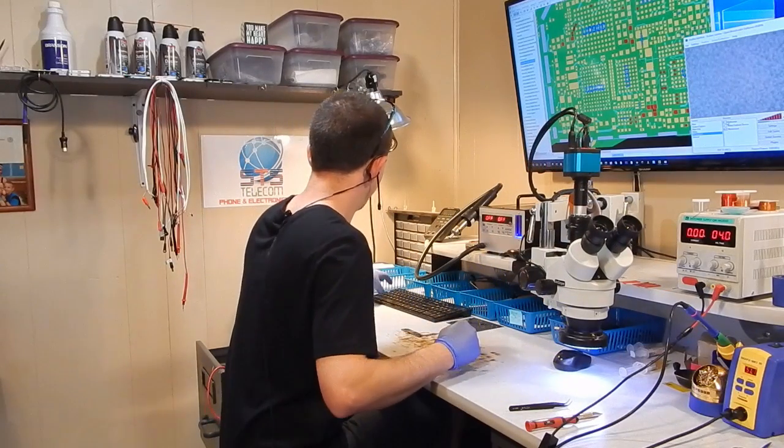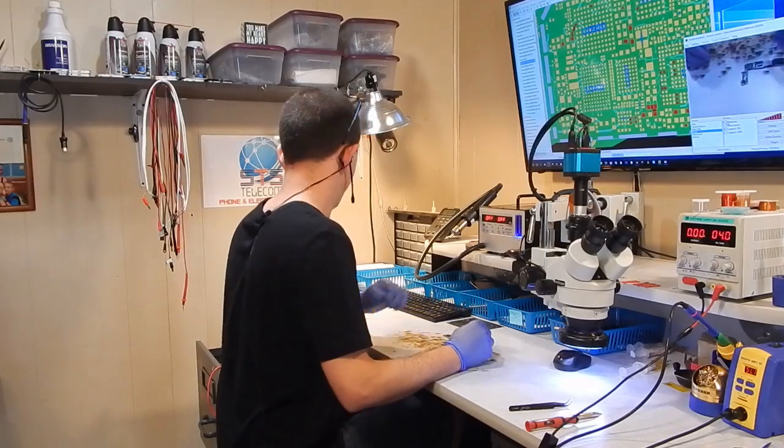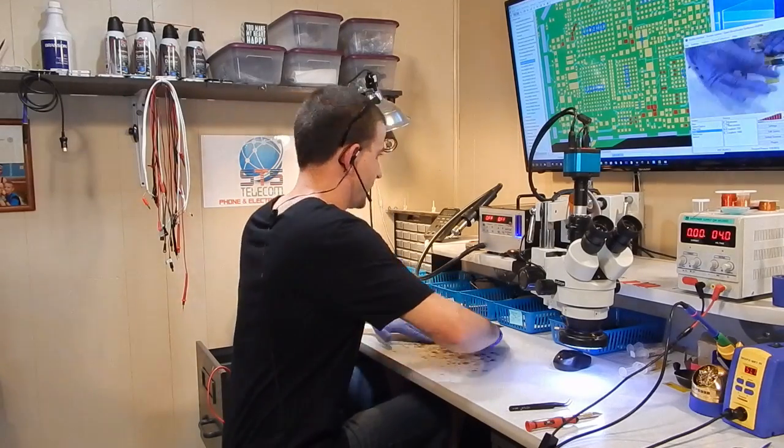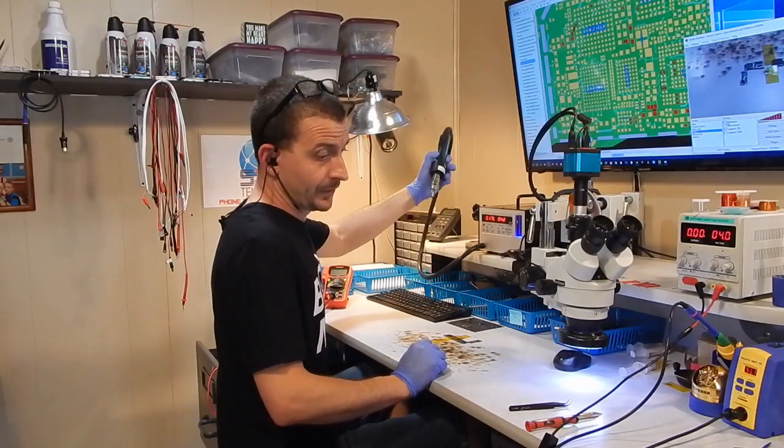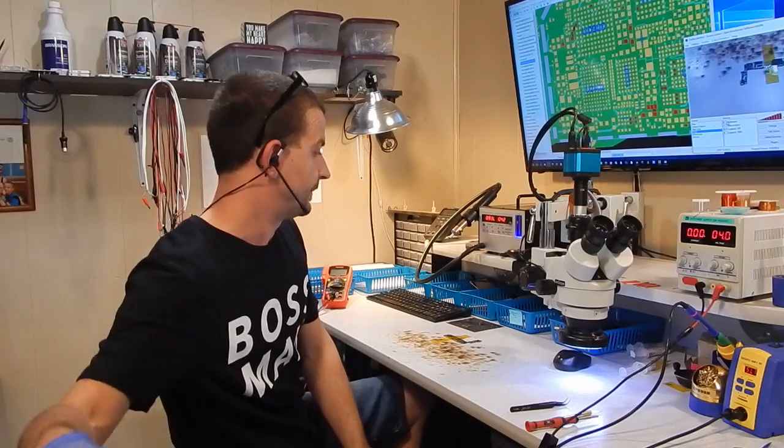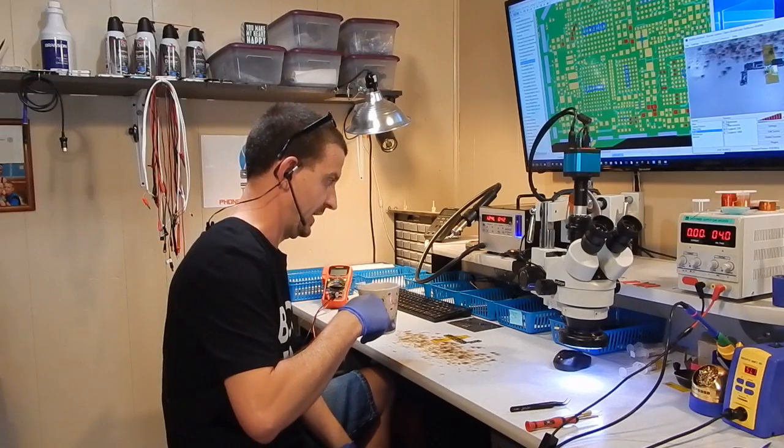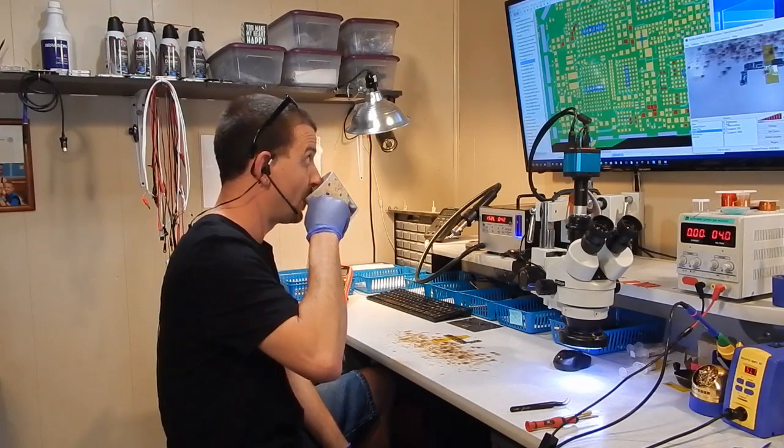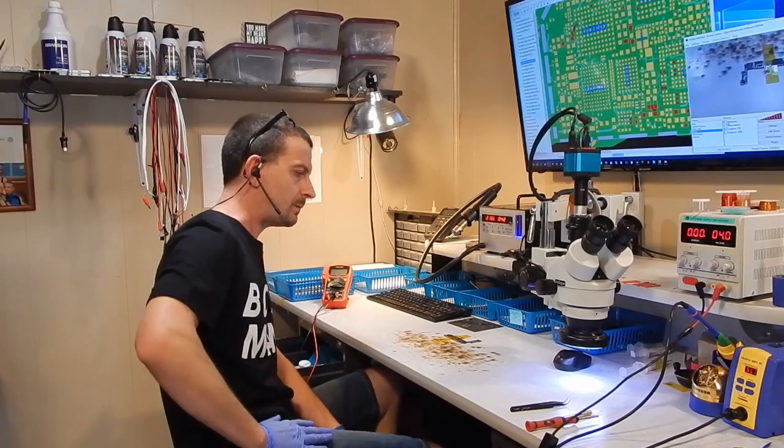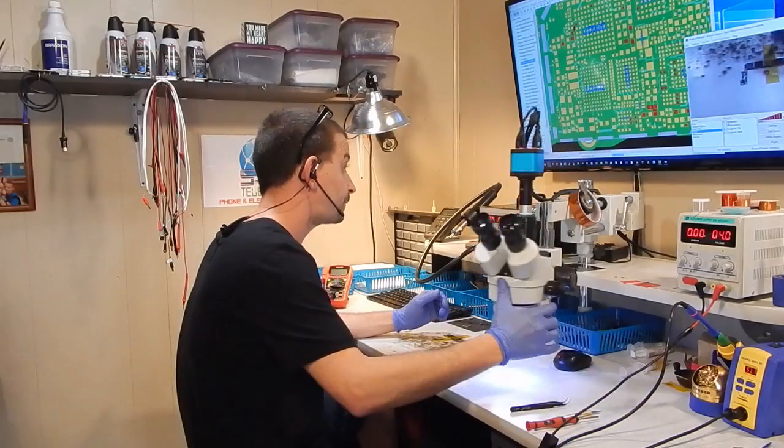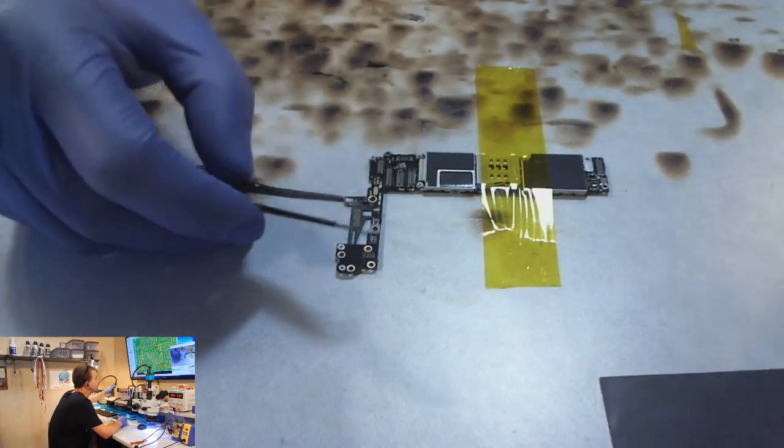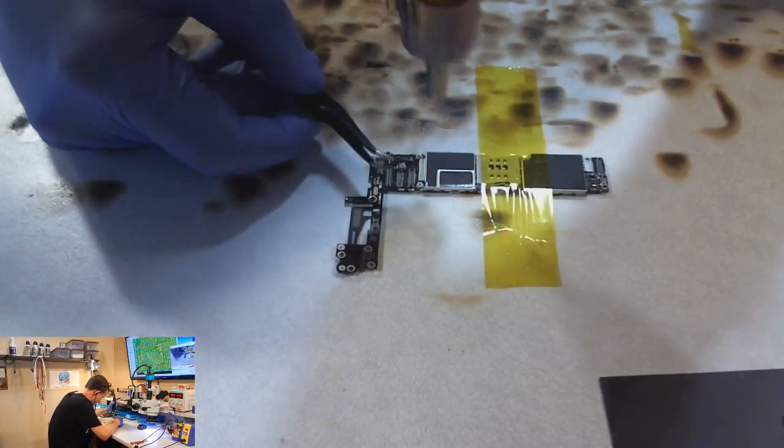So let's go ahead and pull that cover off the phone. If it was a 6+, I would have already said no fix. But it's a 6. They seem to be a little more resilient as far as components not popping loose because of heat on the other side of the board. Alright, let's start heating the shield up. And then I'll move the board so I can get it under the microscope.